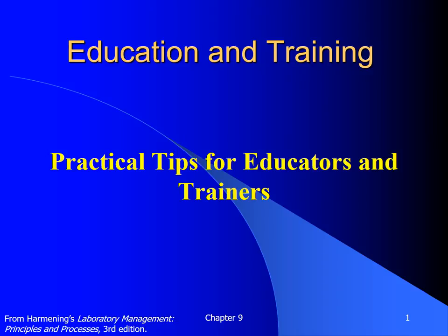This lecture covers Chapter 9 in your textbook on Education and Training: Practical Tips for Educators and Trainers. This lecture will provide the learner with an overview of the domains and levels of learning, followed by a discussion of the design and application of instructional objectives as learning outcomes. In addition, the process of assigning learning levels to instructional objectives as well as matching the level of instruction to the needs of the learner and the task will be described.